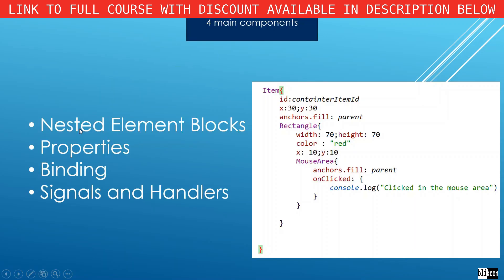QML has four main components. It has nested elements — blocks. You can see here what QML looks like: we have an Item with curly brackets, inside it a Rectangle item, and inside the Rectangle a MouseArea item — they are nested. QML has properties, things like X, Y, width, height, and color. You can bind properties together. And we also have signals and handlers — for example, onClicked in the MouseArea is a signal handler, and you can also emit signals in Qt Quick.